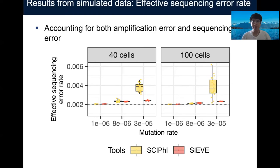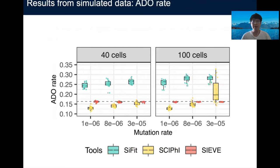There are also some important parameters that we want to compare. For example, effective sequencing error rate — we name it so because it accounts for both amplification error and sequencing error at the same time. In the picture, the gray dashed line represents the real value used to generate the simulated data. When the mutation rate is relatively low, SCIF is comparable with the comparison method, but once the mutation rate is increased, SCIF outperforms immediately. Another important parameter is the ADO rate. SCIF outperforms both comparison methods with rather accurate estimates and very small variance.